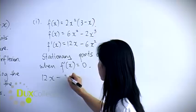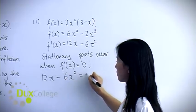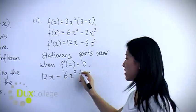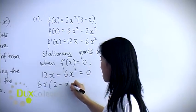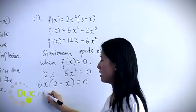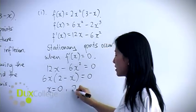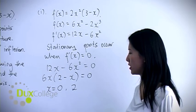So you have 12x - 6x² = 0. Factorize. Hence x = 0 and x = 2 are stationary points.